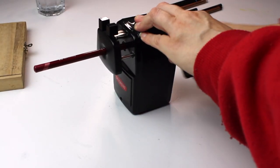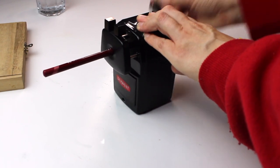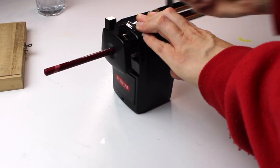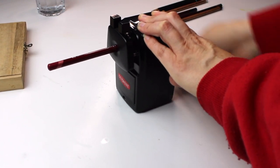The first sharpener I'll show you is the Derwent manual helical sharpener. This is what I use for my harder pencils, like my Polychromos, because it gets them to a really sharp point.